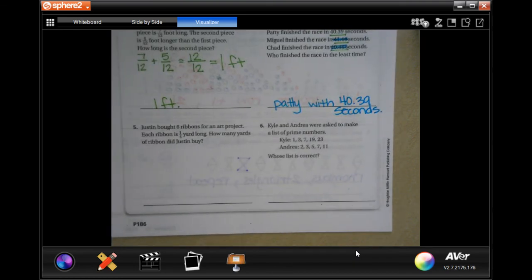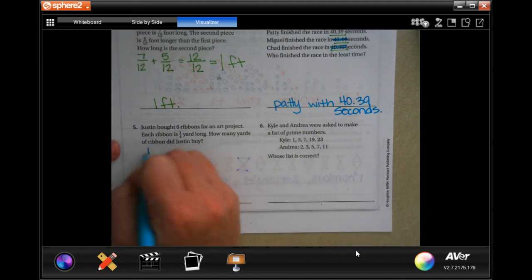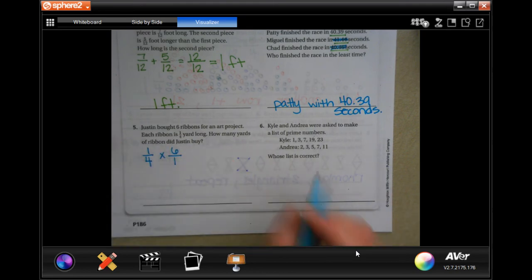Okay, Justin bought 6 ribbons for an art project. Each ribbon is a quarter of a yard long. How many yards of ribbon did Justin buy? Okay, well, one quarter of a yard long, and he bought 6 of those. Well, 6 is the same as 6 over 1.